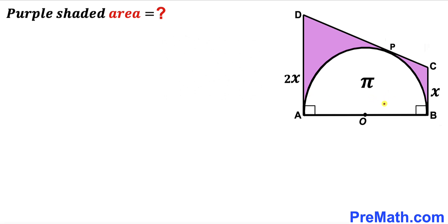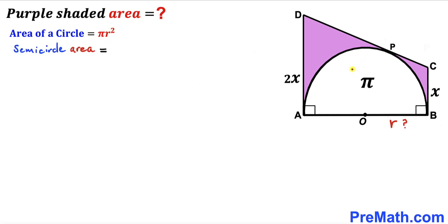Our first step is to calculate the radius of this semicircle. Let's label the radius as lowercase r. Recalling the area of a circle formula — area equals πr² — and since we are dealing with a semicircle, the semicircle area becomes πr² divided by 2. We have been given the semicircle area as π.